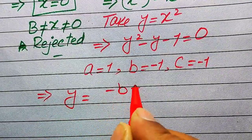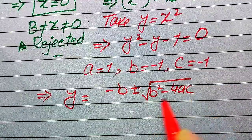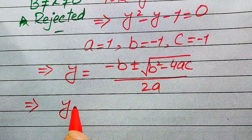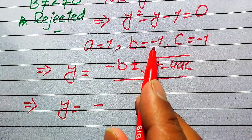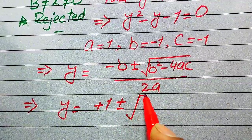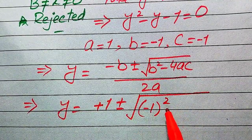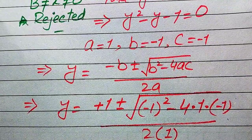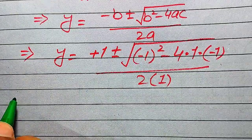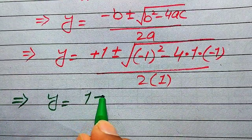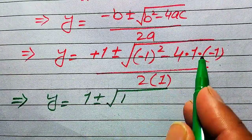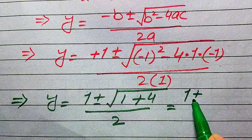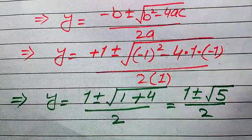Applying the quadratic formula y = (-b ± √(b² - 4ac)) / (2a), and substituting a = 1, b = -1, c = -1, we get y = (1 ± √(1 + 4)) / 2, which simplifies to y = (1 ± √5) / 2.